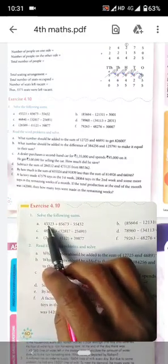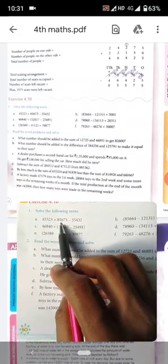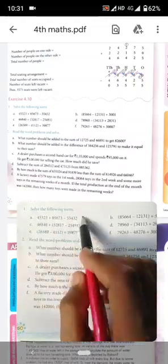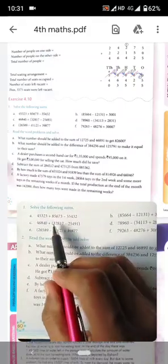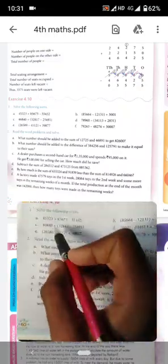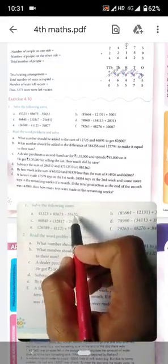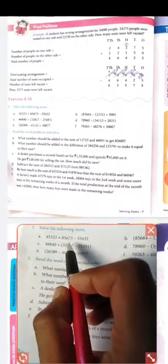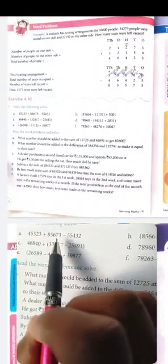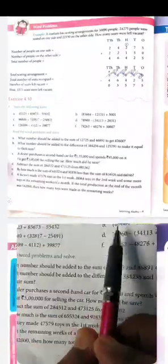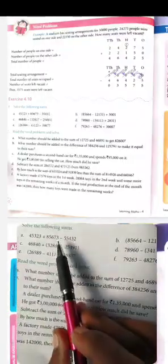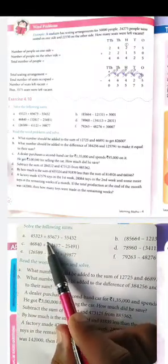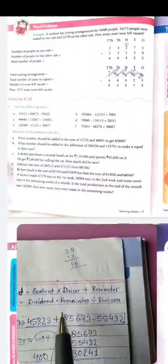45,333 plus 85,673 minus 55,432. So how to solve?